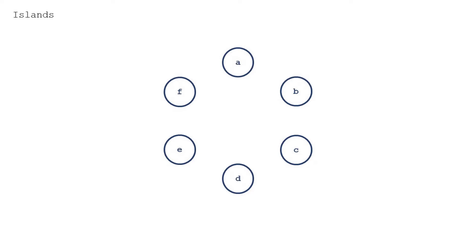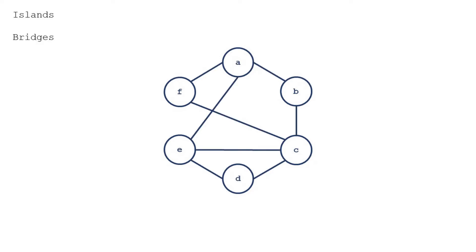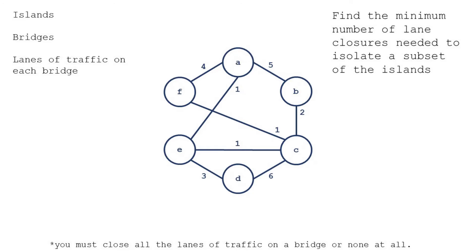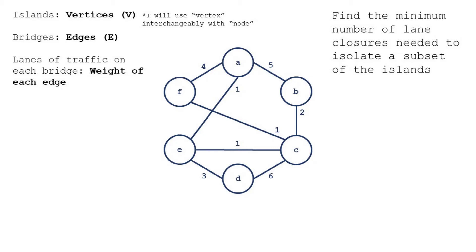You're the mayor of a city consisting of six islands. Between some of the islands are bridges, and there's a certain number of lanes of traffic on each bridge. To prevent the spread of a disease, we want to isolate a subset of the islands. We do this by closing lanes of traffic, and we want to minimize the number of lanes we need to close. Let's use some graph theory to solve the problem. The islands will be vertices, the bridges edges, and the lanes of traffic on each bridge will be the weight of each edge.